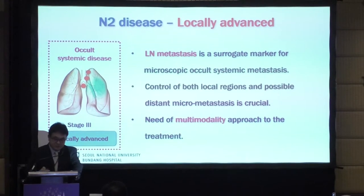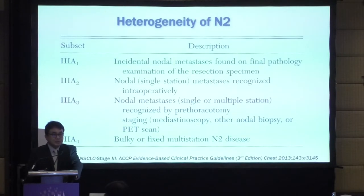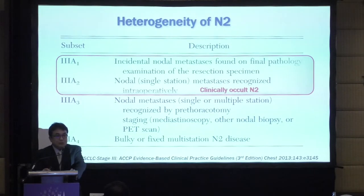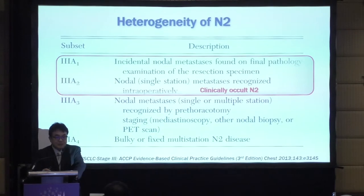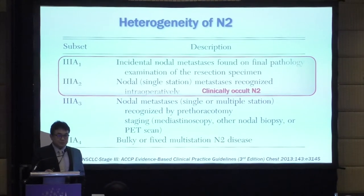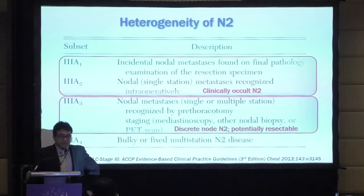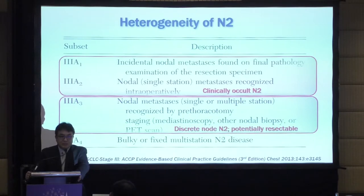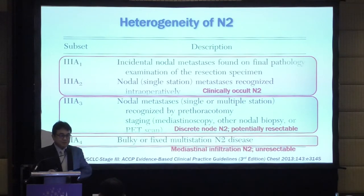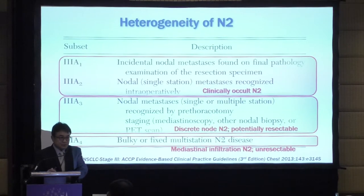We need a multimodal approach to this specific disease population. N2 is very heterogeneous. 3A1 is detected by pathological examination after surgery. 3A2 is diagnosed during surgery like a frozen biopsy — this is clinically occult N2. 3A3 is diagnosed before surgery by imaging, EBUS, mediastinoscopy, or nodal biopsy — the discrete node N2 in potentially resectable cases.